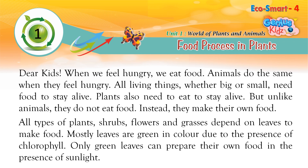But unlike animals, plants do not eat food. Instead, they make their own food. All types of plants — shrubs, flowers and grasses — depend on leaves to make food. Mostly leaves are green in color due to the presence of chlorophyll. Only green leaves can prepare their own food in the presence of sunlight.